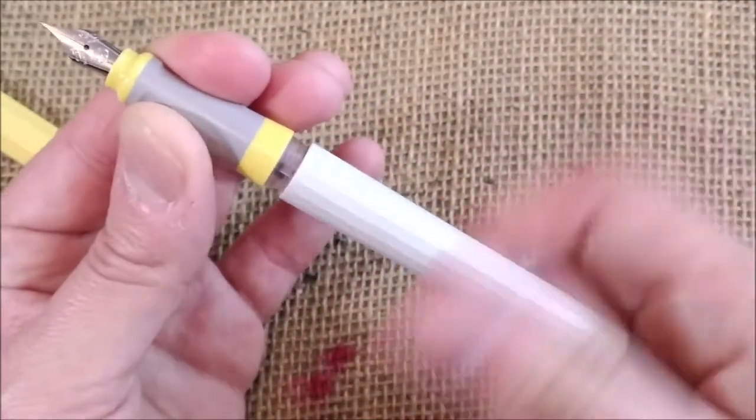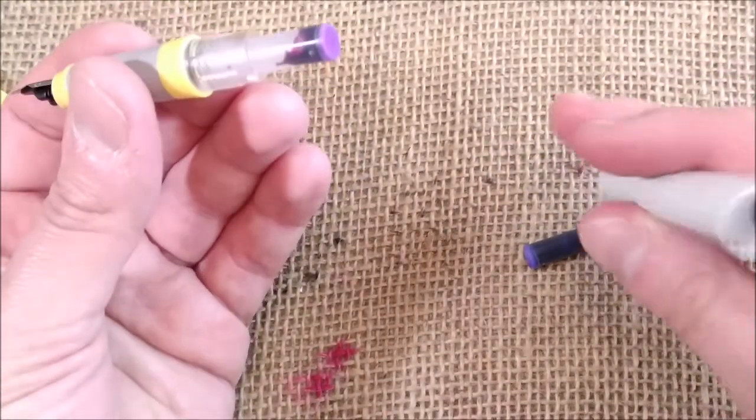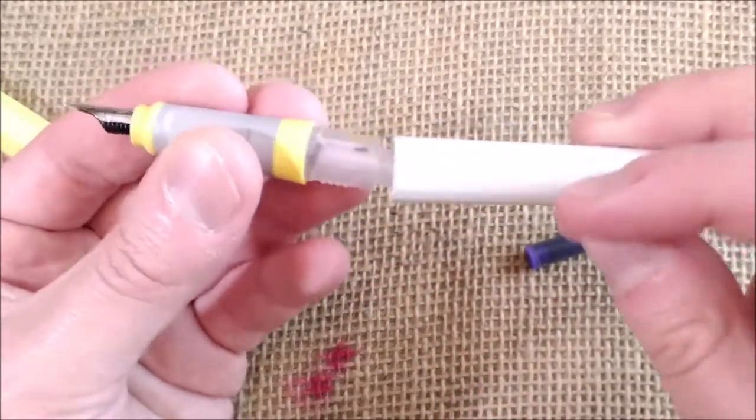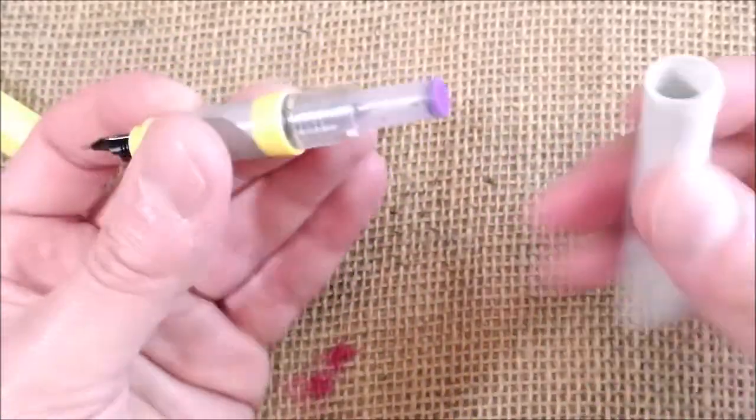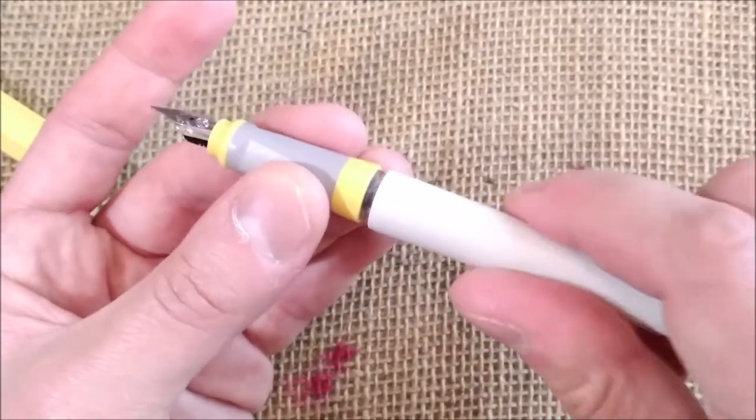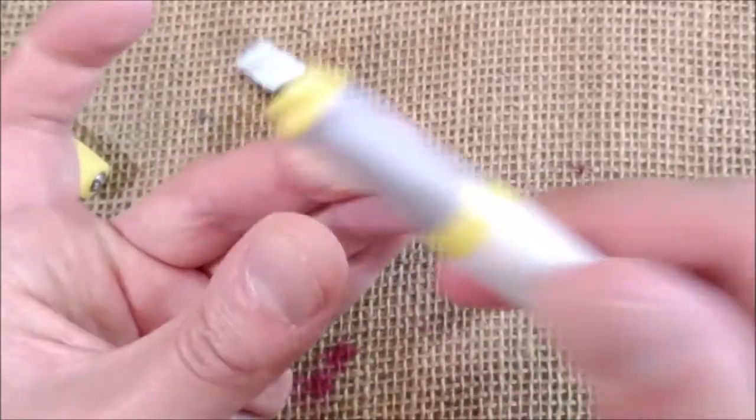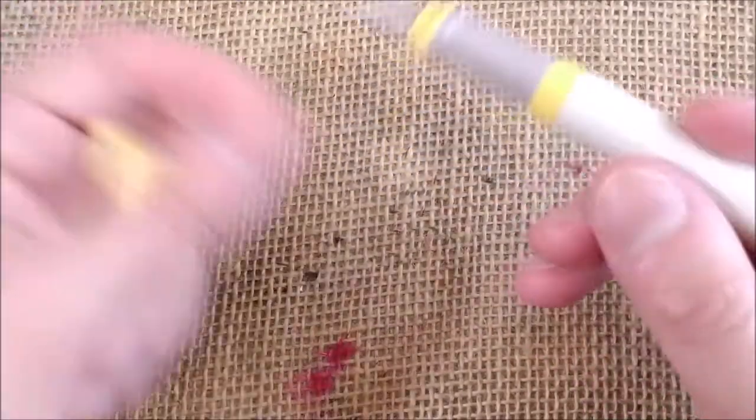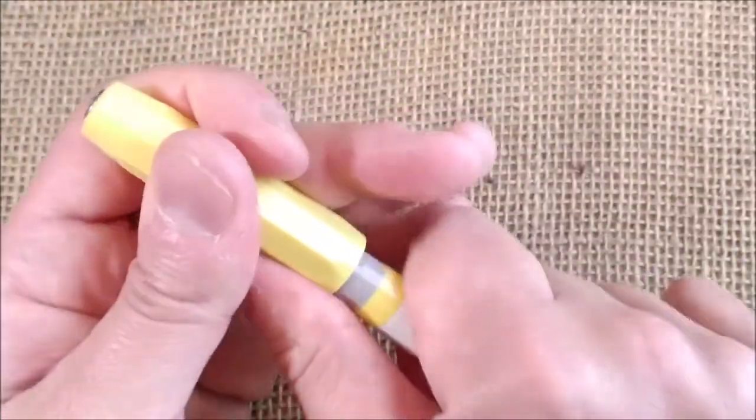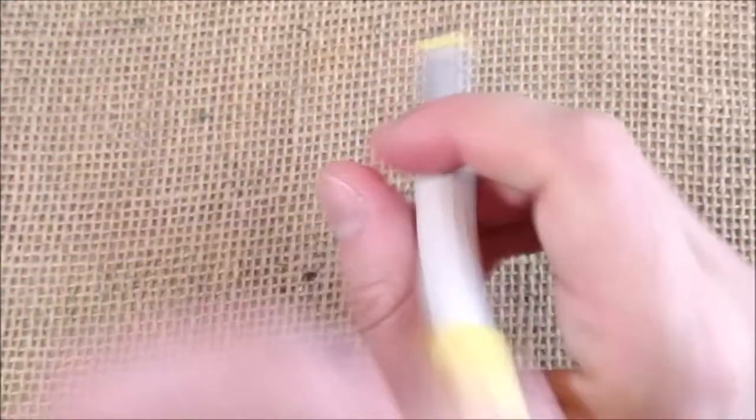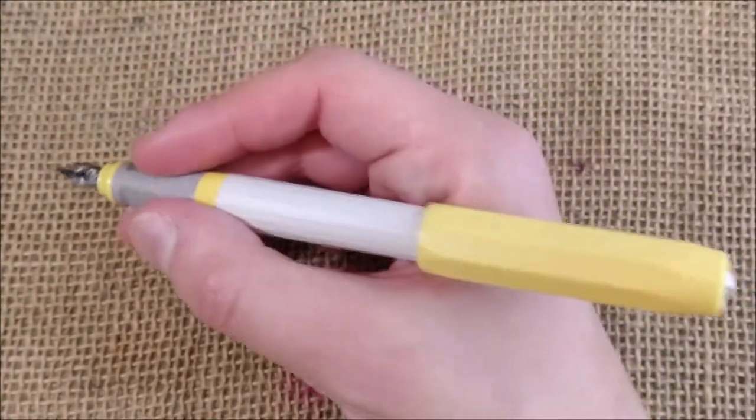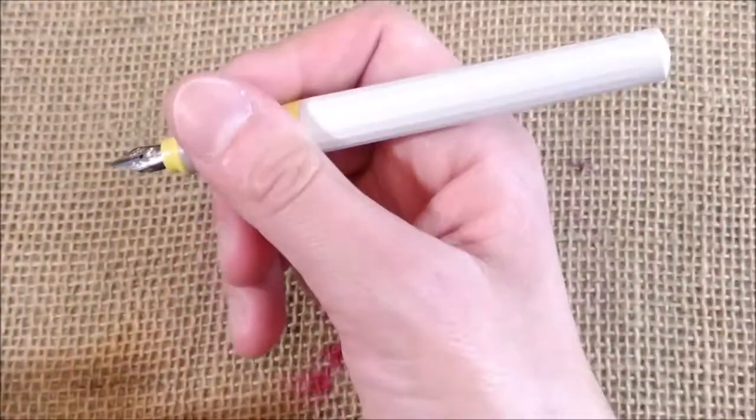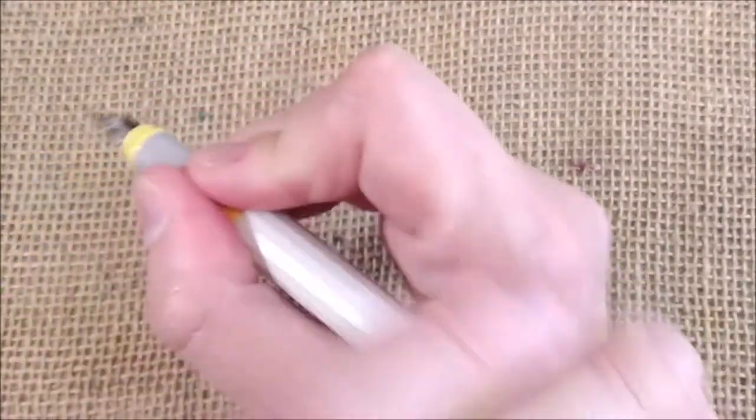You can remove the barrel that unscrews. You have a light transparent screw there and you have room for one big international sized cartridge, one big international sized converter, or two short international sized cartridges. The cap clicks on place quite snugly and it posts very well. When posted it becomes too long in my opinion but the balance is still good because the cap posts securely but deeply and the cap is very light.